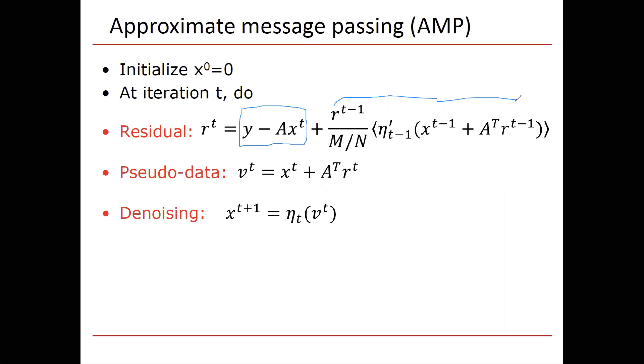The next step, pseudodata. vt, so v, the pseudodata iteration t, is xt plus a transpose times the residual. Now, as I've said, the pseudodata has been proved under at least some conditions to be equal in distribution to the true x plus additive white Gaussian noise.